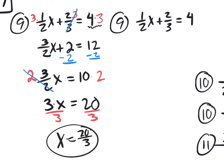That's an improper fraction. You could also write it as 6 and 2 thirds — 3 goes into 20 six times with remainder 2 — or as a decimal 6.33333. My point of writing number 9 twice is to show you how we get rid of one fraction at a time, or we could get rid of all fractions at the same time.